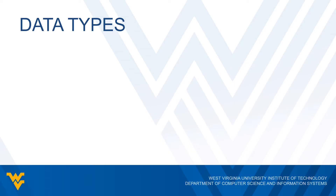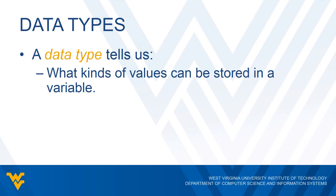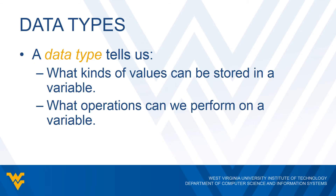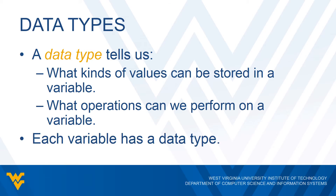Now, whenever we have a variable, there is some data type associated with it. So what is a data type? We've seen this in other programming classes, but it doesn't hurt to review. A data type gives us some information — it tells us what kind of values can be stored in a particular variable, and it also tells us what operations we're allowed to perform on a variable. Every single variable has some data type associated with it.